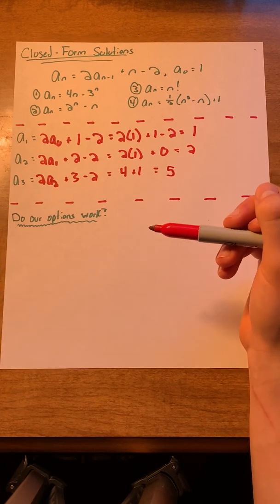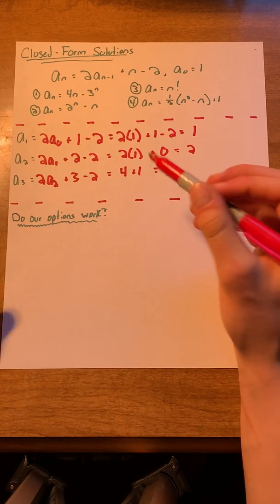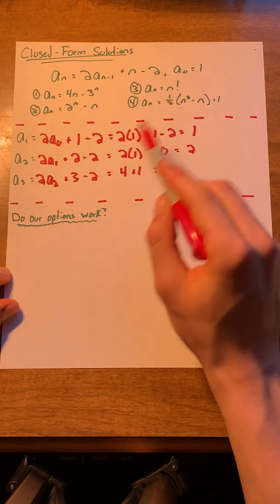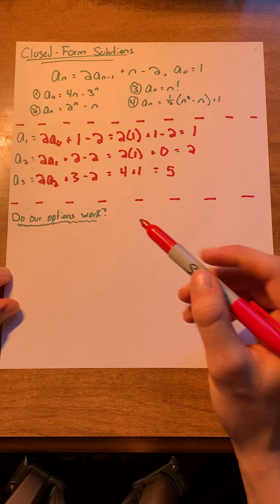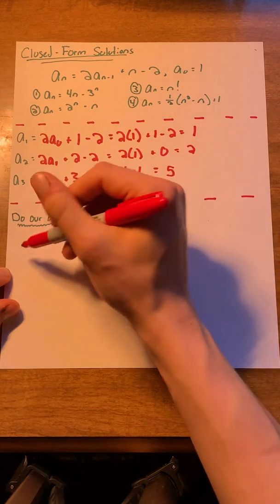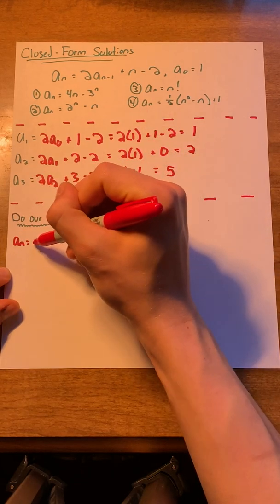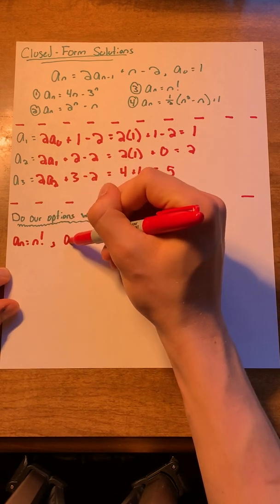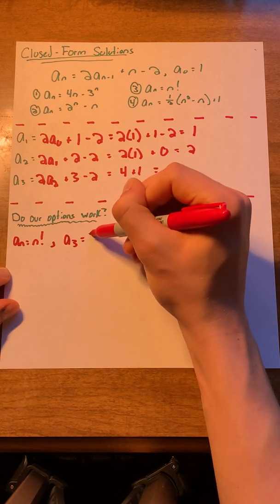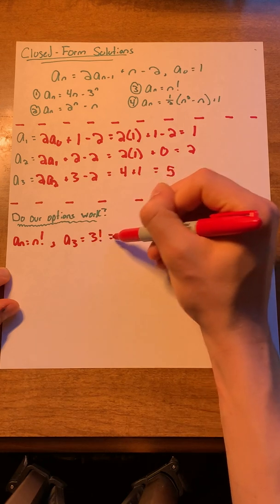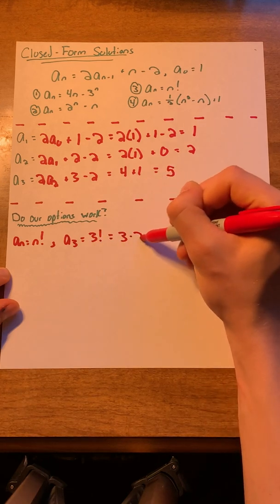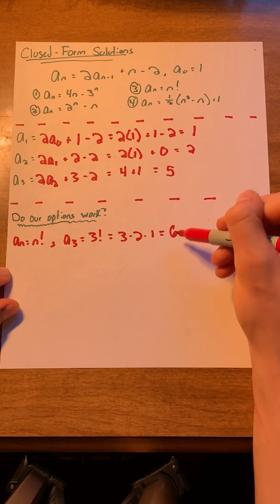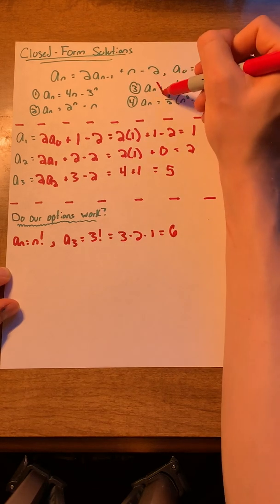Now, to find the correct closed form solution, we can just try these solutions with one of our values to see if they work. For example, let's try the solution a of n equals n factorial. If we plug in a of 3, we'll get a of 3 equals 3 factorial, which equals 3 times 2 times 1, or 6. 6 is not equal to 5, so that can't be a solution.